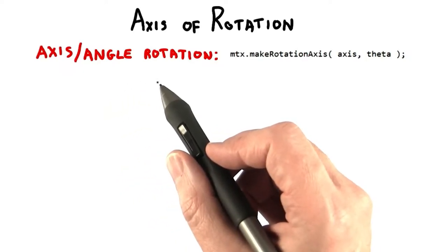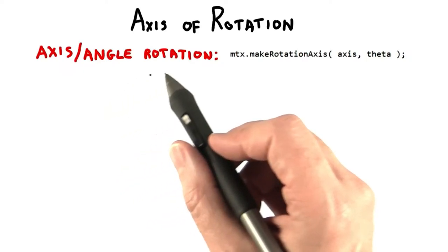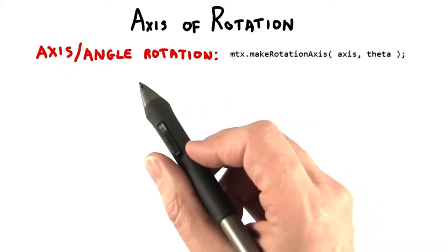So far, the matrix class hasn't done all that much for us. I've shown you how to do exactly what you already knew how to do, translate and rotate around the x, y, or z axis.